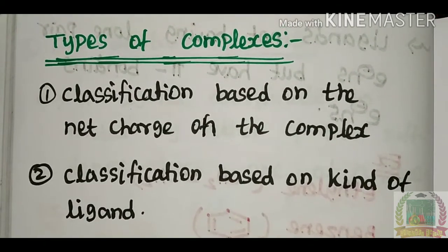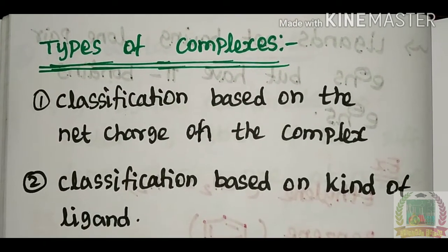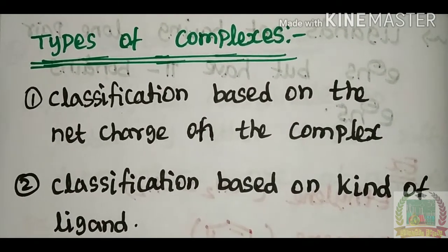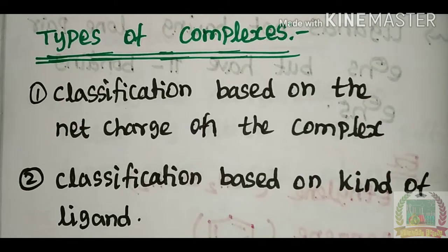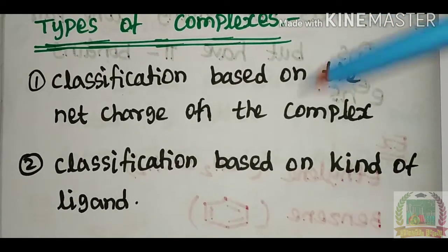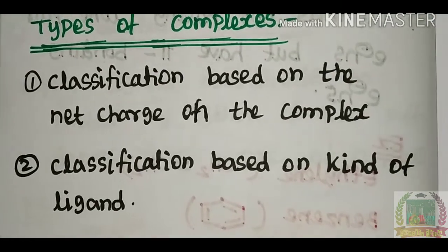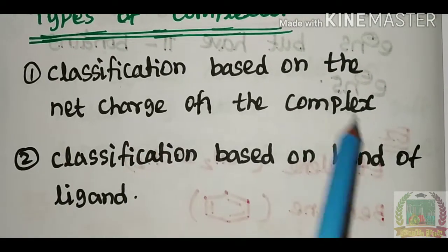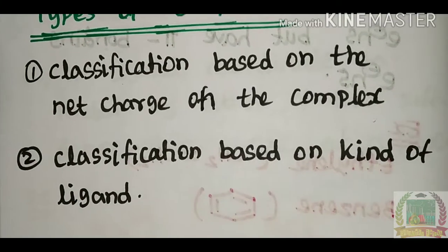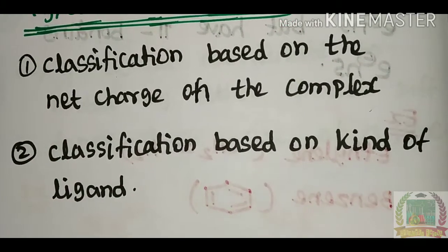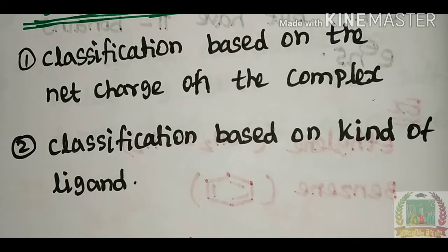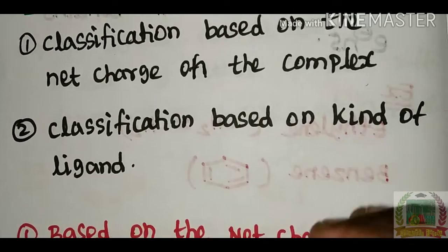Let's talk about the types of complex in Coordination Chemistry. We will discuss complexes based on two classifications: the first is the net charge, and the second is the type of metal and ligands involved.